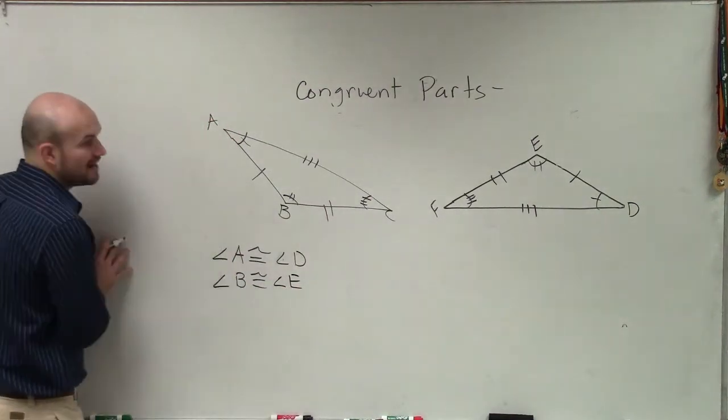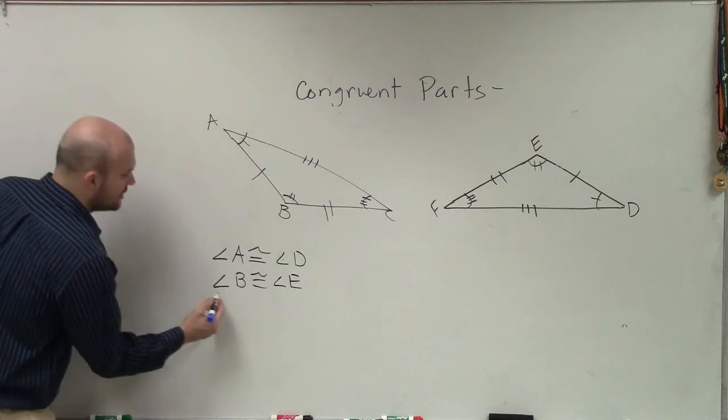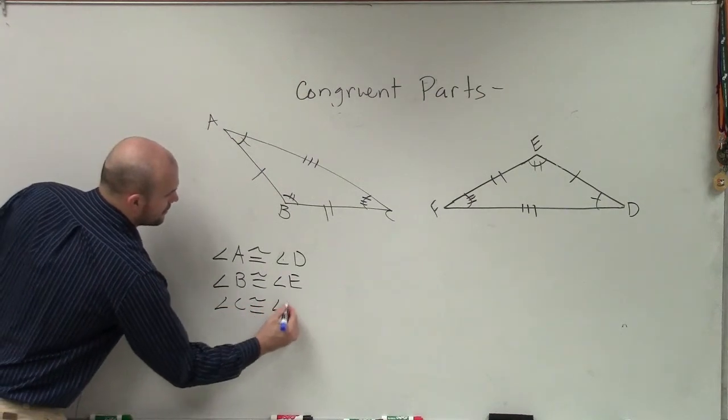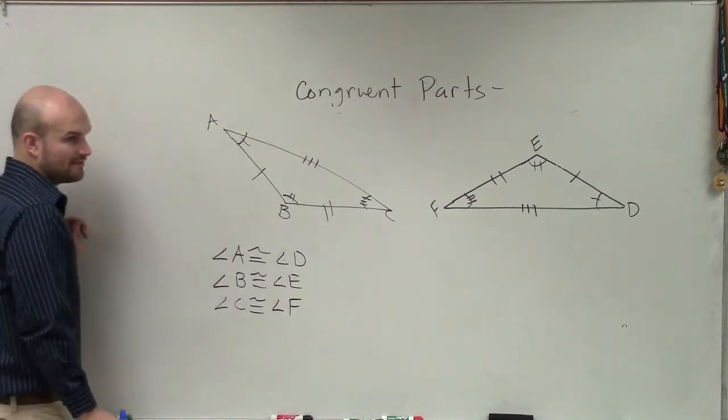So you can say angle B is congruent to angle E. And then, obviously, if we know two angles are equal to each other, we know that the third angles have to be equal to each other, is equal to angle F.